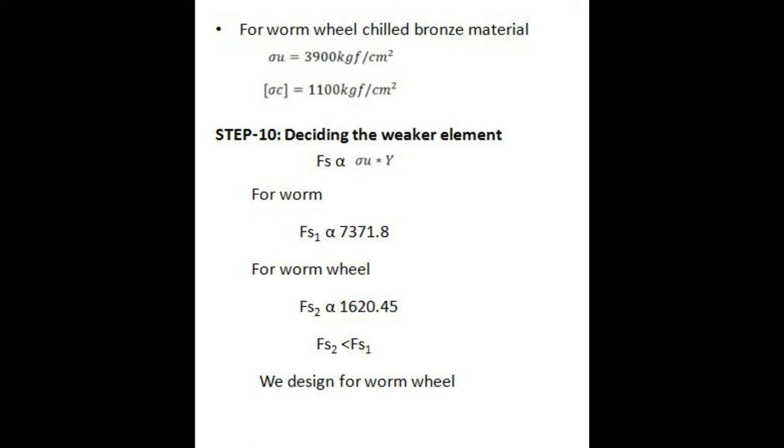Step 10: Deciding the weaker element. Beam strength is directly proportional to ultimate strength times Lewis form factor. For worm, beam strength is 7371.8. For worm wheel, beam strength is 1620.45. Therefore the weaker element is worm wheel, so we design for worm wheel.